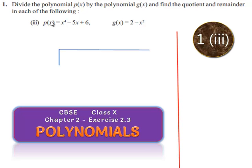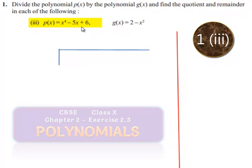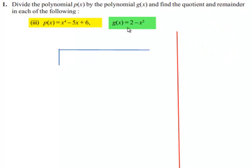Coming to the third bit: P of x is equal to x power 4 minus 5x plus 6, and G of x is equal to 2 minus x square. We need to divide the polynomial P of x by the polynomial G of x. Therefore, P of x is the dividend and G of x is the divisor.